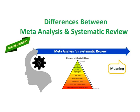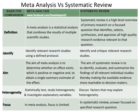Differences between Meta-Analysis and Systematic Review. A meta-analysis is a statistical analysis that combines the results of multiple scientific studies. Whereas a systematic review is a high-level overview of primary research on a focused question that identifies, selects, synthesizes, and appraises all high-quality research evidence relevant to that question.